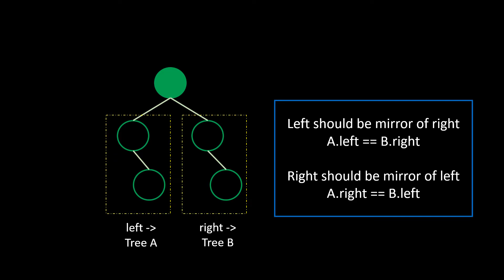But, it is not simple comparison. For it to be symmetrical, the left child must be a mirror of right and the right child must be a mirror of left. So, A dot left must be structurally equal to B dot right and A dot right must be structurally equal to B dot left.